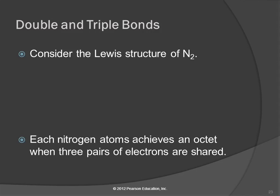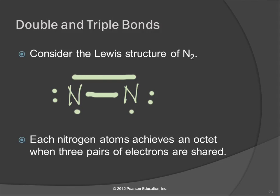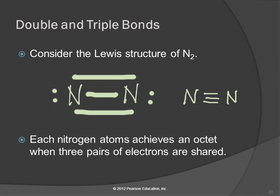We can also have triple bonds. Let's look at nitrogen, which has five valence electrons. With two nitrogen atoms, they can share two pairs, but each would only have seven. They each have another electron they could share, so sharing three pairs gives each nitrogen two, four, six, eight — an octet. We draw that as a triple line. That's a triple bond — three pairs of electrons being shared.